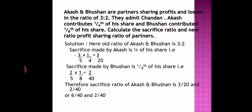Let us go through the question first. Here it is given: Akash and Bhushan are partners sharing profits and losses in the ratio of 3 to 2. That means there are two partners and they share the profit in the ratio of 3 to 2 by 5. They admit Chandan as a new partner. Akash contributes one fourth of his share and Bhushan contributes one eighth of his share. That means when Chandan joins the existing firm, some share of profit is to be given to Chandan.